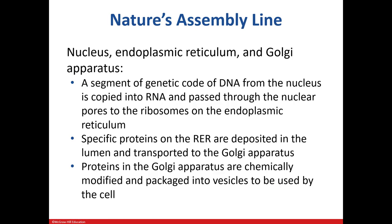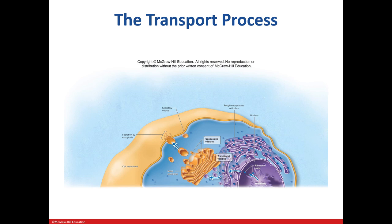The nucleus, ER, and Golgi are all considered to be an assembly line. The DNA contains the set of instructions to build the proteins, the ER assembles them, and then the Golgi modifies and packages them. Here we can see the ribosome components being transported via the pores to the ER, the transitional vesicles pinching off and making their way to the Golgi, and then the delivery using the condensing vesicles.